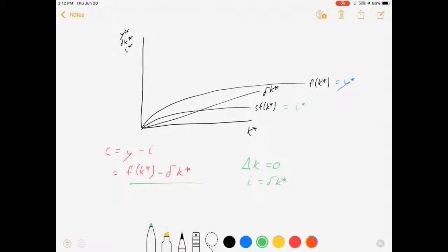So with this rewritten with consumption looking like so, I want to point out that consumption is the gap between the Y curve F of K star and the depreciation curve. Now in some places consumption is very small and in some cases consumption is larger. So I want to find the place where consumption is the largest.